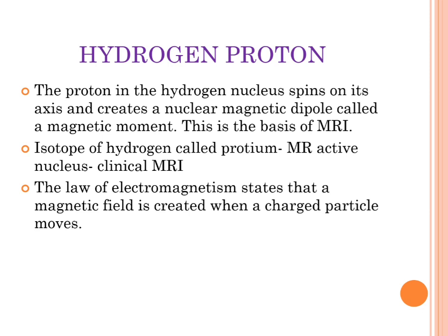Hydrogen has three isotopes. The first is protium, which has a single electron and a single proton — atomic number one, mass number one. The second is deuterium, which has one electron, one proton, and one neutron — atomic number one, mass number two. The third is tritium, which has one proton, two neutrons, and one electron — mass number three, atomic number one. For MRI imaging we use protium, meaning the protium isotope of hydrogen is used as the MR active nucleus in clinical MRI.